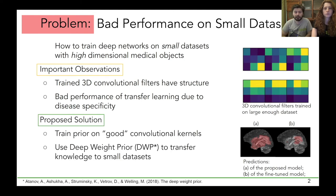Thus, in our solution, we suggest transferring information about the structure of convolutional filters, rather than the weights themselves, from the large dataset — which we call source — to the smaller dataset of interest, referred to as target. We do that by imposing an implicit prior distribution on convolutional filters.